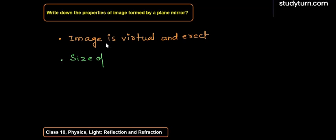So the properties of image formed by a plane mirror are: first property is that the image is virtual and erect. Second property is that the size of image is equal to the size of object.